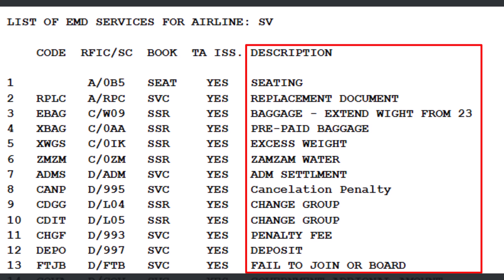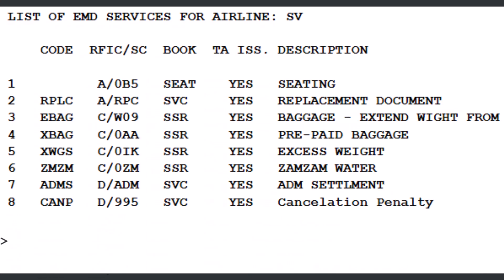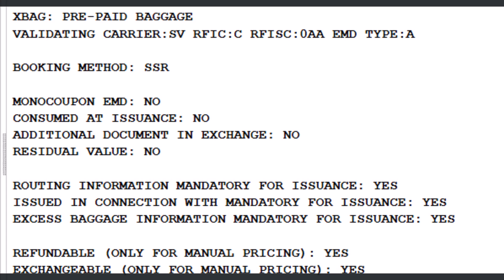To view the full details of a specific EMD service from this list, such as XBAG on line 4, use the command EGSD slash L followed by number 4, then press Enter. This provides the full details and requirements for that particular EMD service.